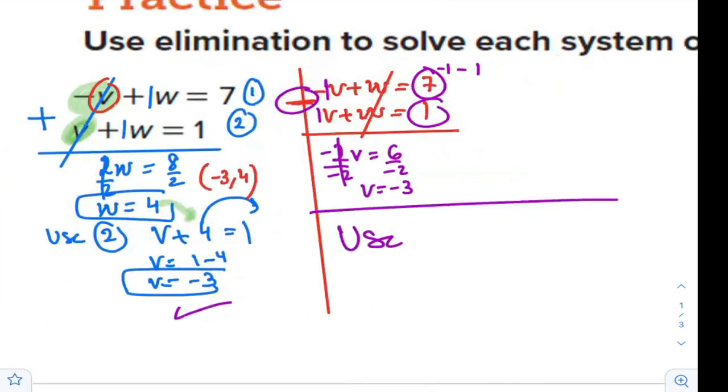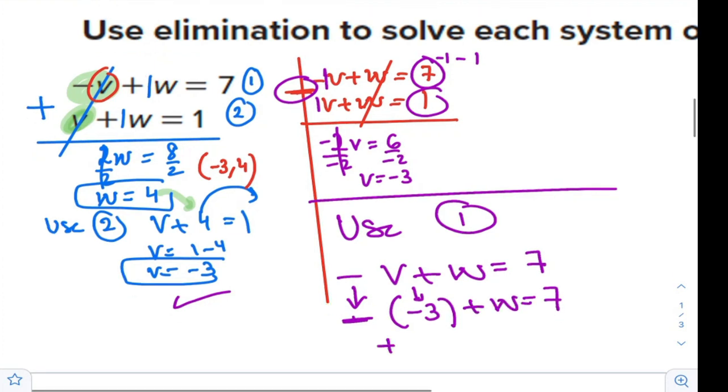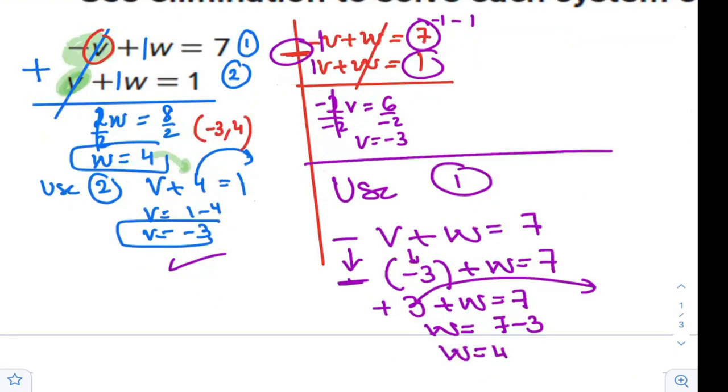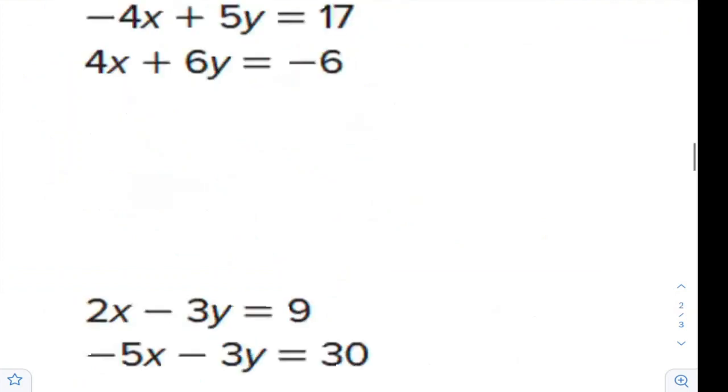Again, use any of the equations. If you use the first one, which is minus v plus w equals 7, so minus v will be replaced by minus 3. Negative of negative 3 is positive 3. And if you solve, w is 7 minus 3, which is 4. And this is exactly the value that we have before.